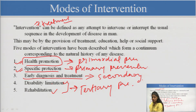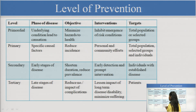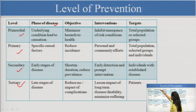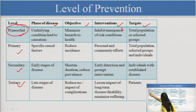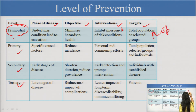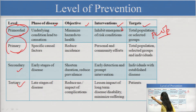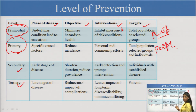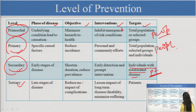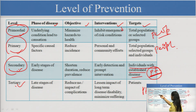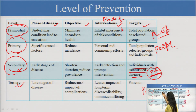These are the modes of prevention and modes of interventions done in all levels of prevention. There is a summary chart for the levels of prevention — primordial, primary, secondary, tertiary — showing the phases of the disease each targets, the objectives, the interventions, and the target groups. Primordial prevention targets normal people with no risk factors. Primary prevention targets people with risk factors but no disease. Secondary targets individuals with established disease — they are patients. Tertiary targets all patients with complications.